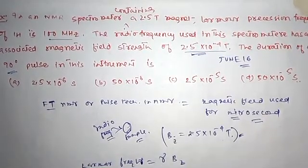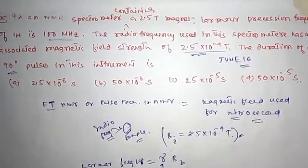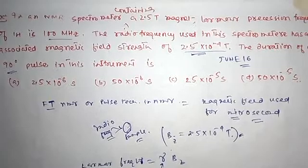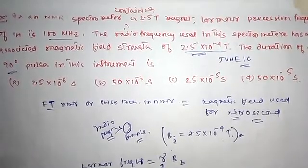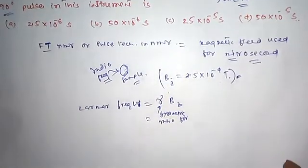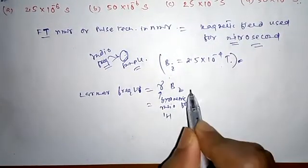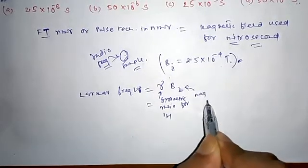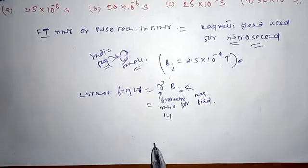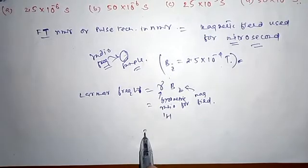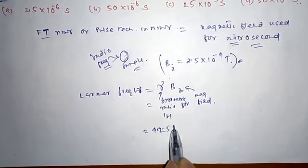...point 57 MHz per Tesla for proton. And what is the value of B₁? It is 2.5 × 10^-4 Tesla.